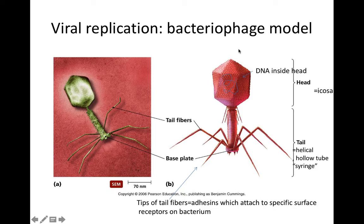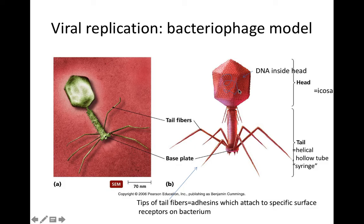This is an example of one of the T-even bacteriophage, and it's just so beautiful. With regard to structure, this T4 bacteriophage is a complex virus because it has not only a protein capsid, which we call the head — and you might recognize this as an icosahedral capsid — and within the capsid is the phage DNA. So this is a DNA virus. But then in addition to this head, the capsid, notice this amazing tail.